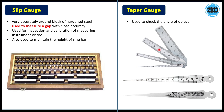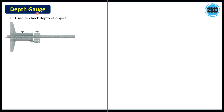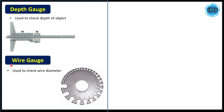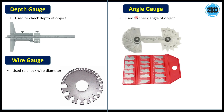We also have the taper gauge, used to check the angles of an object. The depth gauge, sometimes called a vernier depth gauge or caliper depth gauge, is used to check the depth of an object. The wire gauge is used to check wire diameter — it is a ring with a number of holes, and we pass wires through the holes to verify the wire diameter. Finally, the angle gauge is used to verify the angles of an object. That's it for this video — thank you for watching, please like, share, and subscribe.